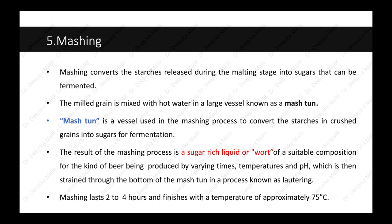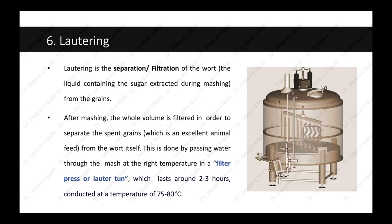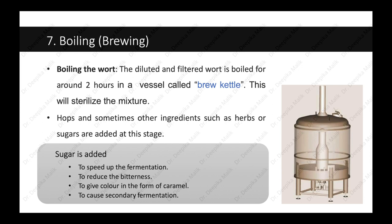The next step is lautering — the separation or filtration of the wort, which is the sugar-rich liquid extracted during mashing. After mashing, the whole volume is filtered to separate the spent grains — an excellent animal feed — from the wort itself. This is done by passing water through the mash at the right temperature in a filter press or a lauter tun, as seen in the diagram. This process lasts around two to three hours and is conducted at a temperature of 75 to 80 degrees Celsius.